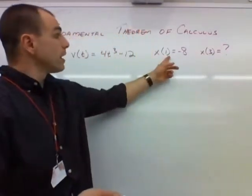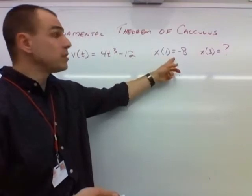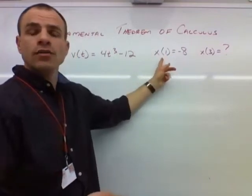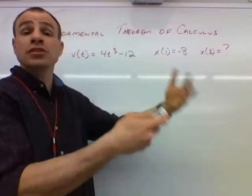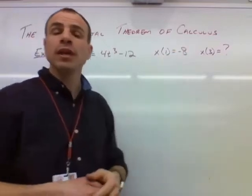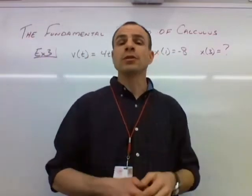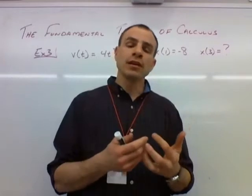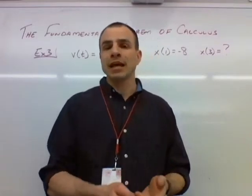We're told that the particle's position is equal to negative 8 when t is equal to 1. So in other words, x of 1, because x is our position function, x of 1 is equal to negative 8. There's our initial condition. So we have the two ingredients in order to write a function for the position at any time.